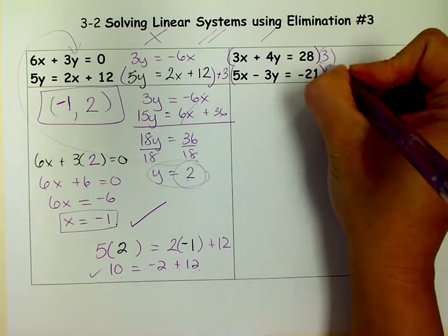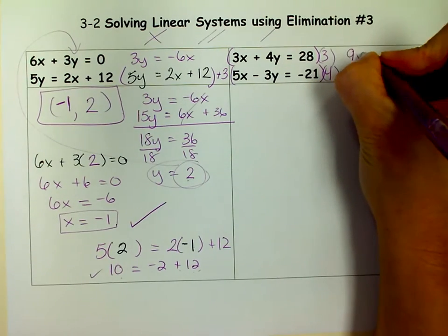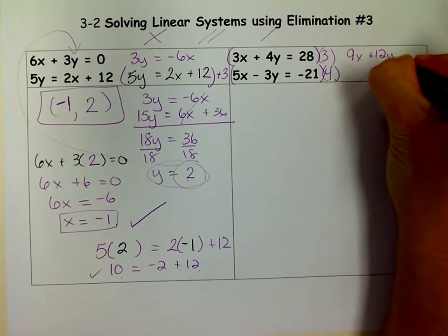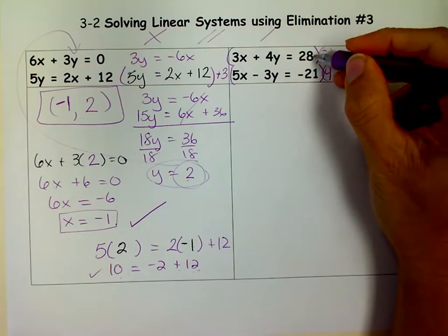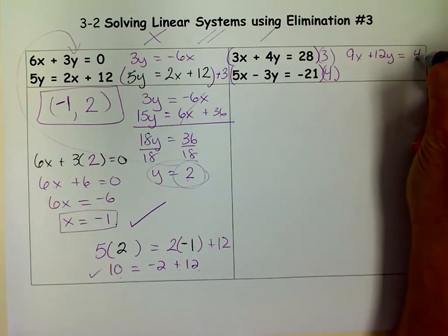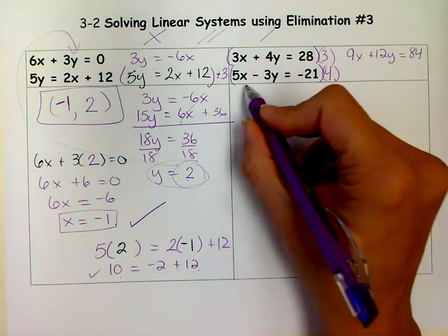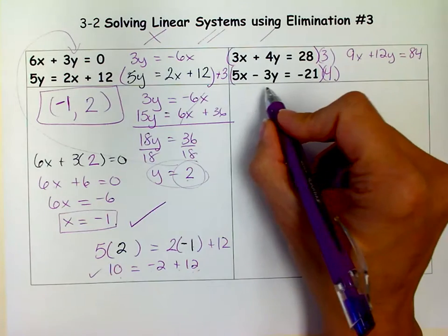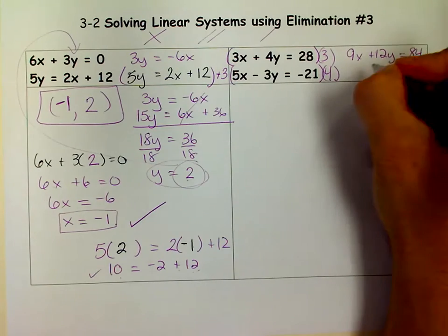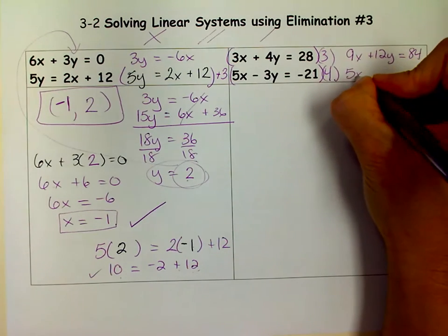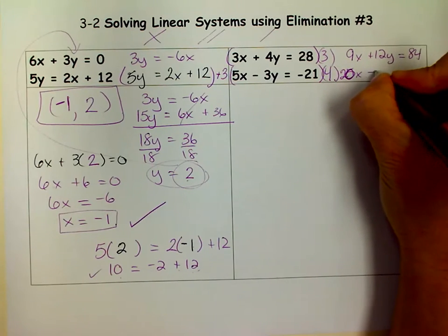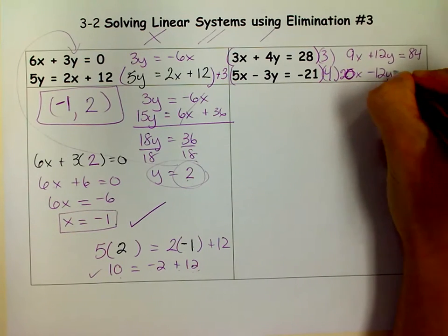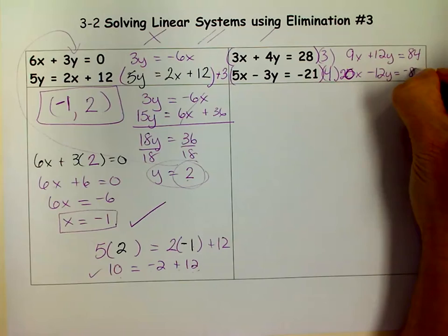I'm going to multiply this whole equation by a 3. And when I do that I get 9X plus 12Y equals 84. 8 times 3 is 24. 2 times 3 is 6. Yes that's 84. And over here I'm going to multiply everything by a 4. So I get 20X, excuse me, 20X minus 12Y equals negative 84.